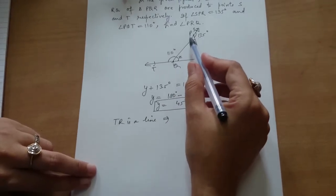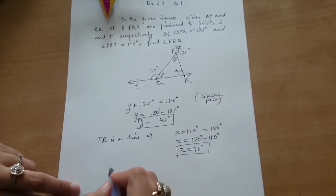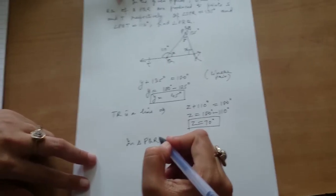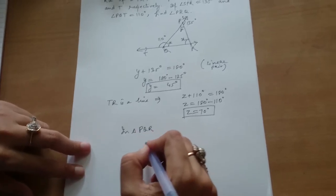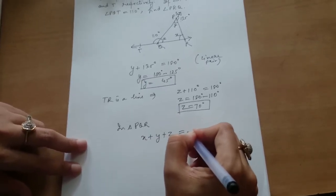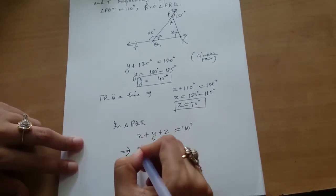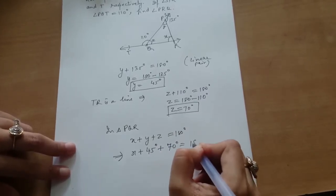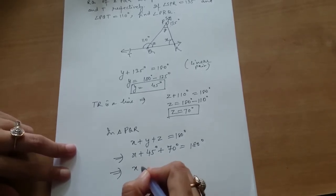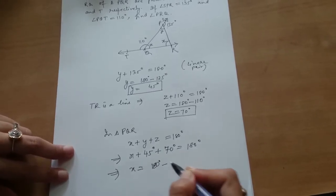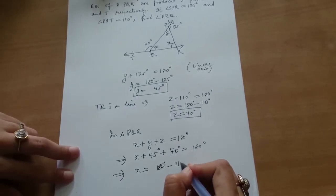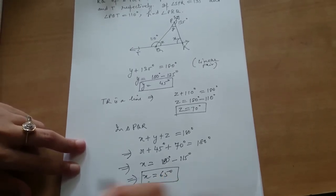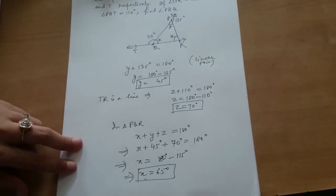Now in triangle PQR, what is the sum of X, Y, and Z? Using the angle sum property, we know that the sum of interior angles of a triangle is 180 degrees. So X plus Y plus Z equals 180 degrees. This implies X plus 45 plus 70 equals 180 degrees. This implies X equals 180 minus 115, which is 65 degrees. So the answer is X equals 65 degrees. Good job.